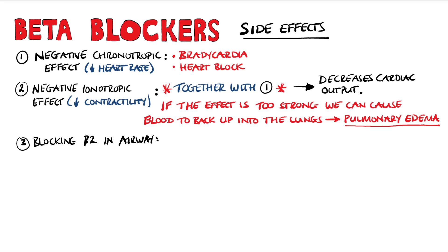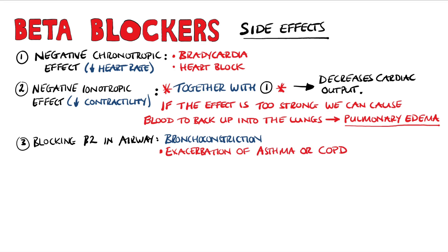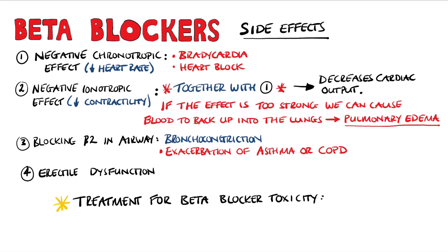Blocking beta-2 receptors in the airways normally gives bronchodilation, but blocking them leads to bronchoconstriction, which can exacerbate asthma or COPD. In patients with asthma or COPD, it is better to give cardioselective beta-blockers. Erectile dysfunction is another potential side effect. Finally, in cases of beta-blocker toxicity, the antidote is glucagon, which has been shown to improve nodal conduction, increase heart rate, and increase myocardial contractility.